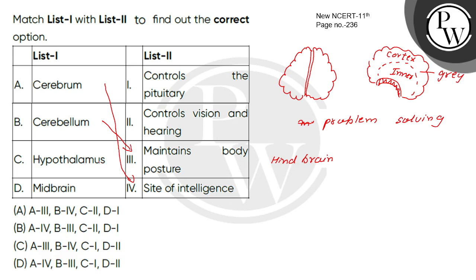Next is the Hypothalamus, which controls the pituitary gland. It releases hormones and regulates various body functions.